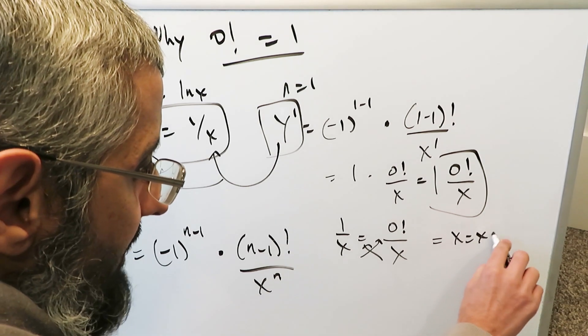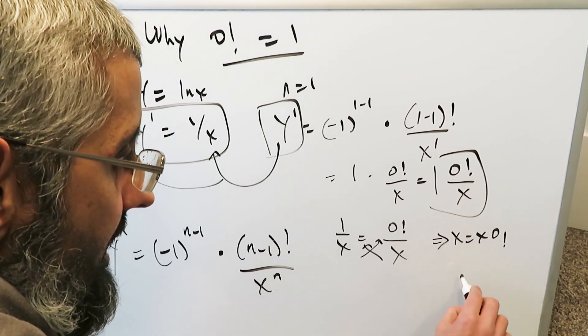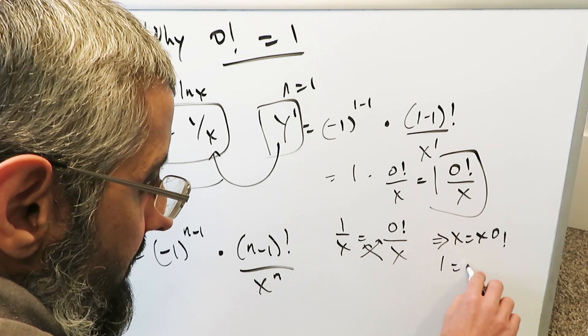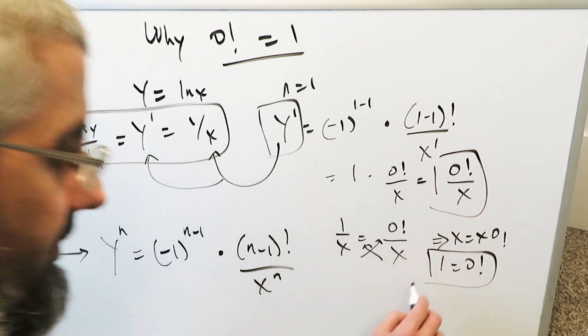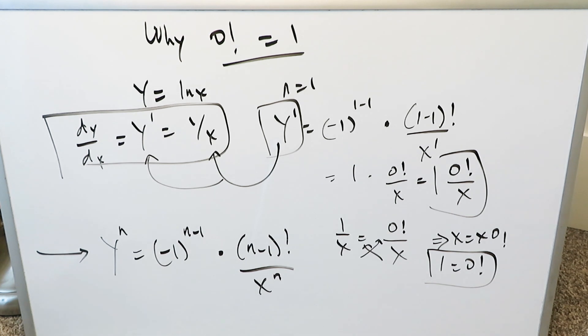You know what the answer is. You're going to get here, x is equal to x times 0 factorial. And then you take the x here, 1 is equal to 0 factorial, and here it is. You've gotten your answer, why 0 factorial equals 1.